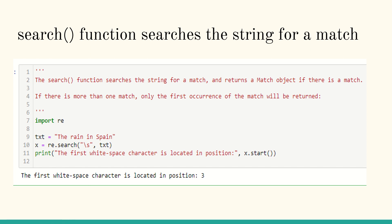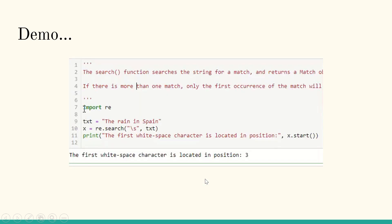The search function searches the string for a match and returns a match object if there is one. If there is more than one match, only the first occurrence is returned. Here import re is done; text is 'the rain in the Spain.' I use re.search(r'\s', text). The special sequence \s finds all whitespace characters. Starting from the beginning: 't', 'h', 'e' — at position three there is the first whitespace. So the output is that the first whitespace character is located at position 3.